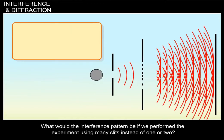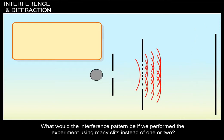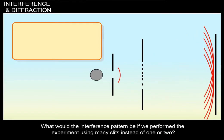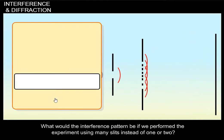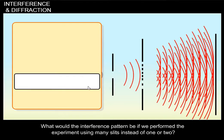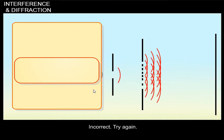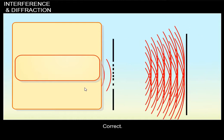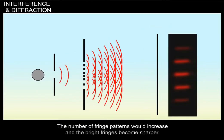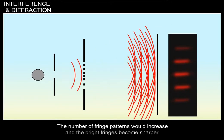What would the interference pattern be if we perform the experiment using many slits instead of one or two? Incorrect. Try again. Correct. The number of fringe patterns would increase and the bright fringes become sharper.